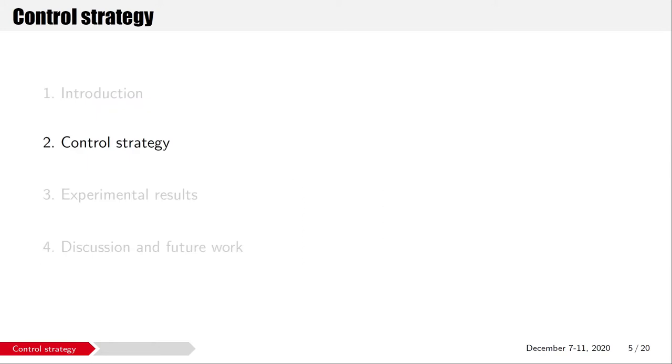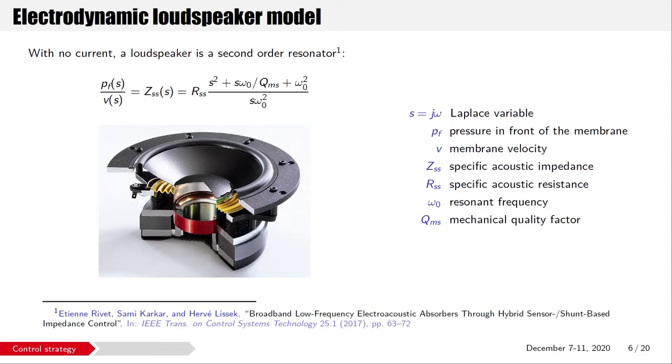The control strategy. I will first shortly explain how the electrodynamic loudspeaker is modeled. Passively, with no current in its coil, a loudspeaker is a mass-spring damper system of the second order. The ratio between the pressure in front of the membrane, p_f, and the membrane velocity, v, is called the Specific Acoustic Impedance, Z_ss. And it is modeled by three parameters: the Specific Acoustic Resistance R_ss, the Resonant Frequency omega_0, and the Mechanical Quality Factor Q_ms.